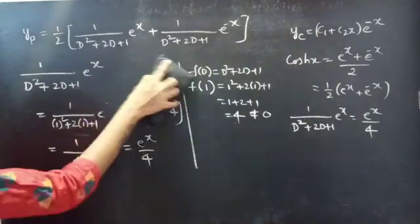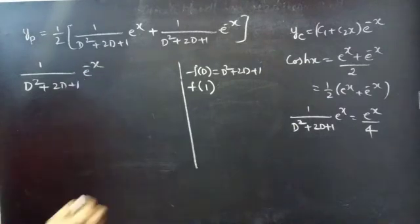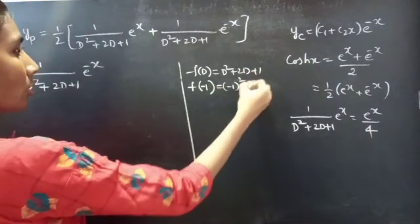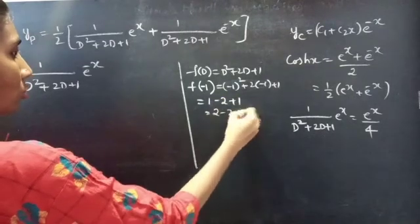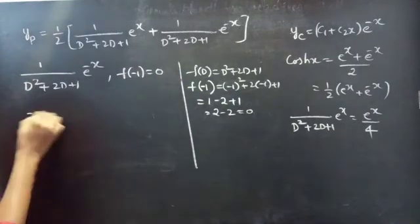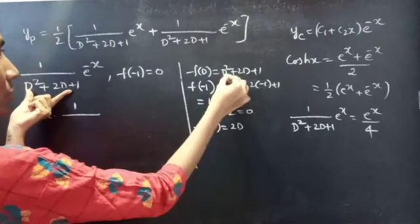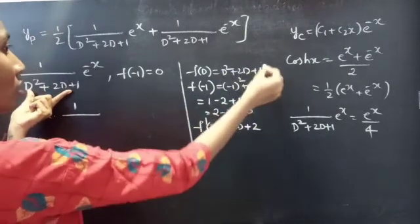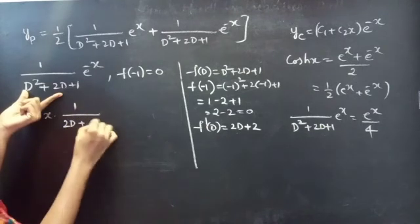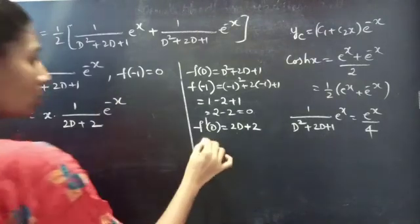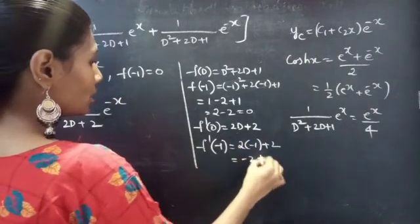Now for the second term, find f(-1) = (-1)² + 2·(-1) + 1 = 1 - 2 + 1 = 0. Since f(-1) = 0, we write x · (1/f'(D)) · e^(-x). Find f'(D): the derivative of D² + 2D + 1 is 2D + 2. Then f'(-1) = 2·(-1) + 2 = -2 + 2 = 0. Again we got 0.